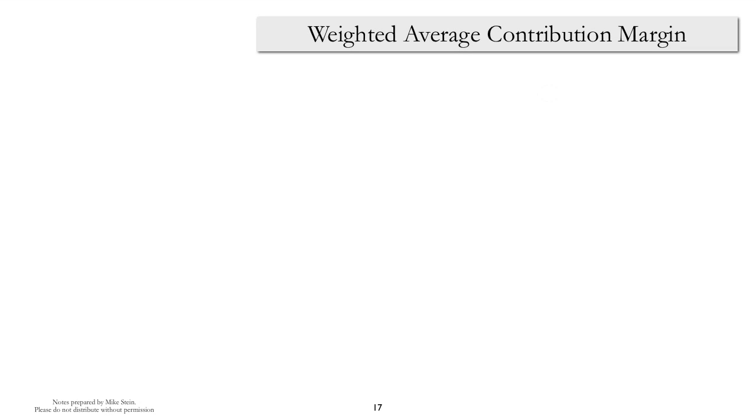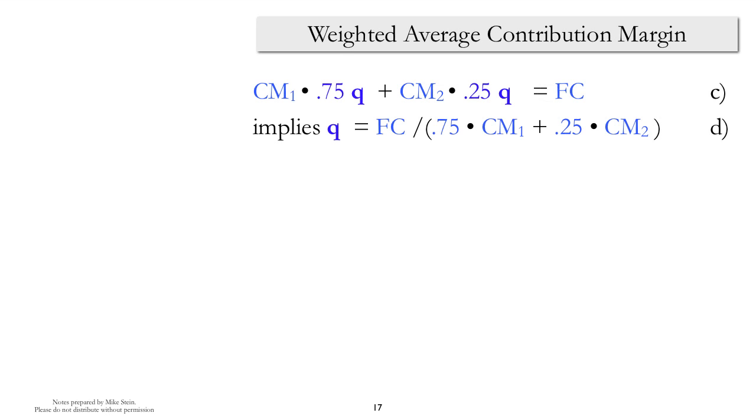Let's see what happens when we try to solve the equation. So we take the break-even equation in terms of Q and sales mix, and now we solve for Q. Well, it seems to work out okay in the sense that there's only one unknown, Q. But what is this curious thing that's sitting in the denominator of equation D?